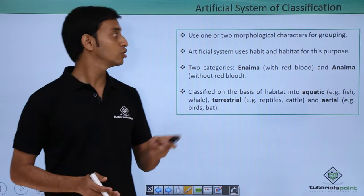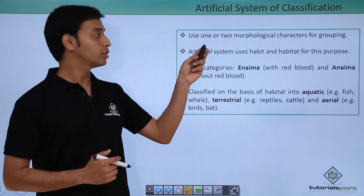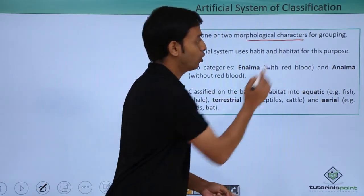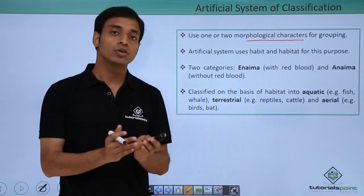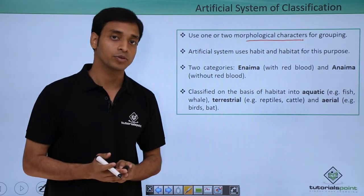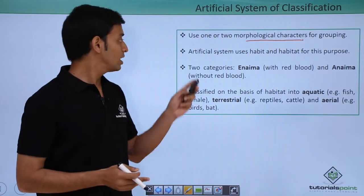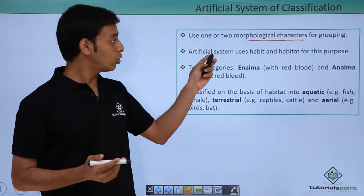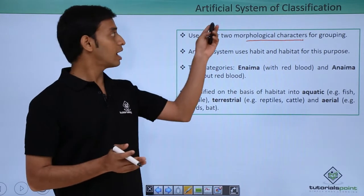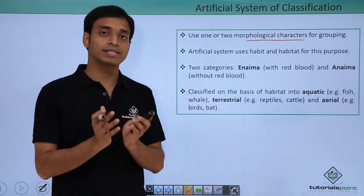The first is known as the artificial system of classification. Based on this classification, it uses one or two morphological characteristics for grouping — that is, characters which are easily observable from the surface or outside the organism. This artificial system also uses habit and habitat for this purpose.